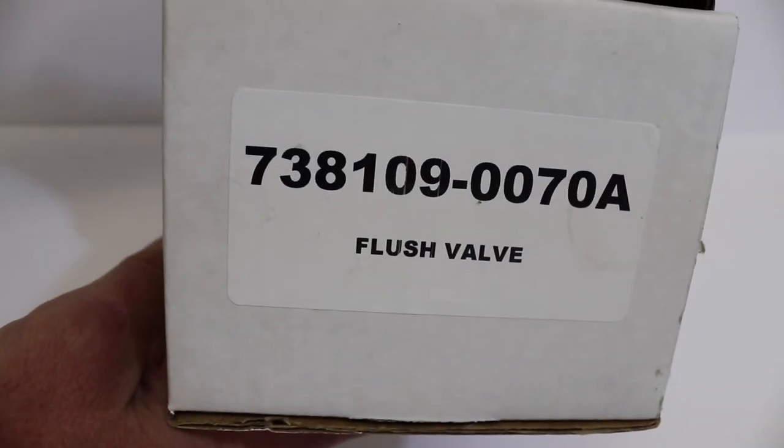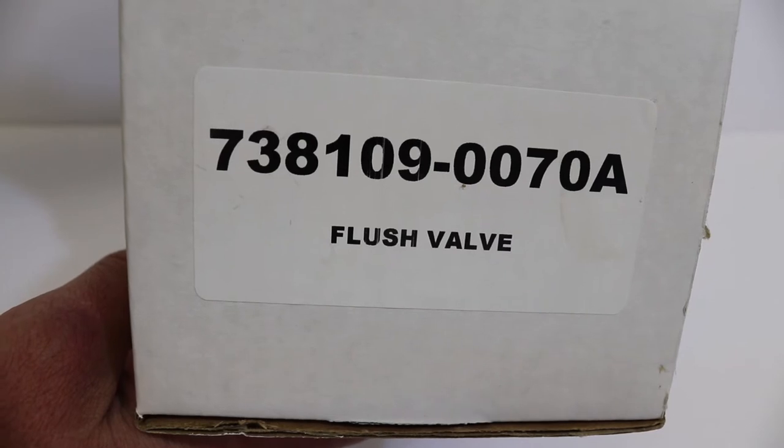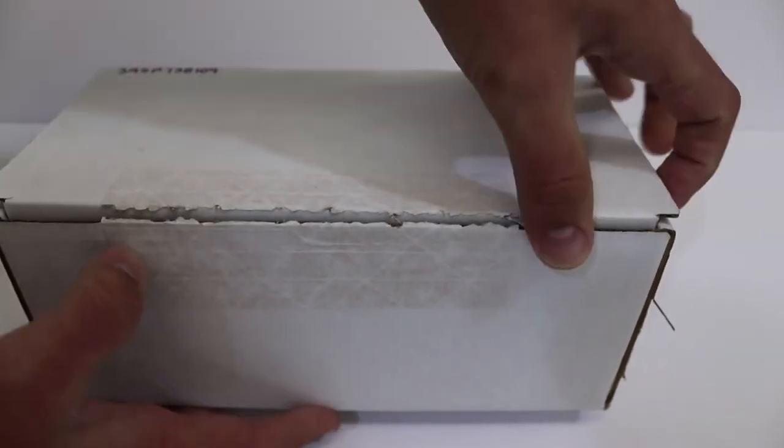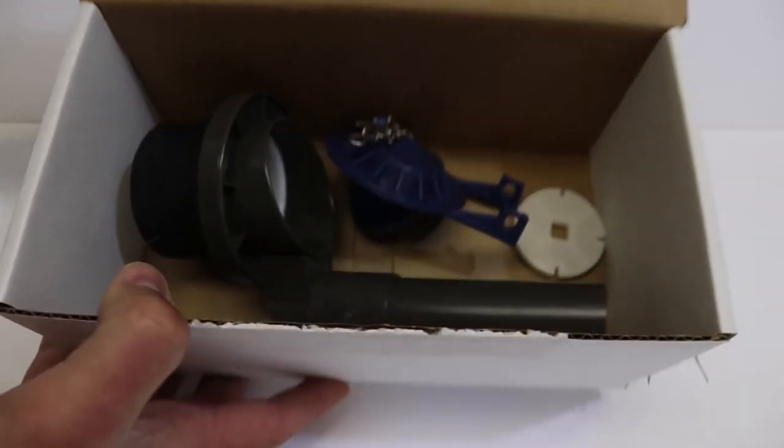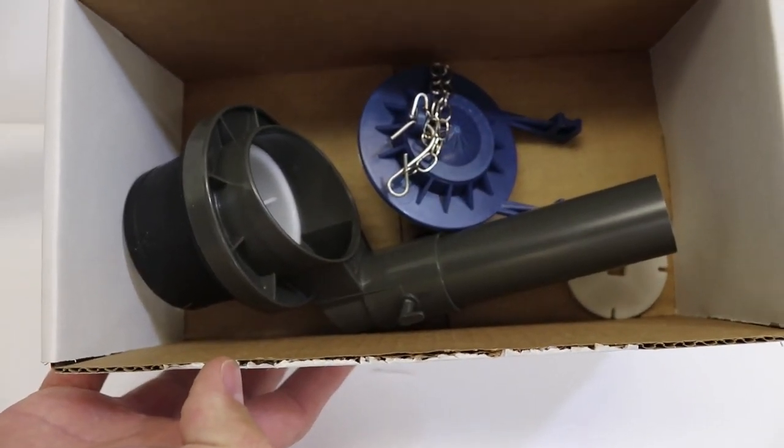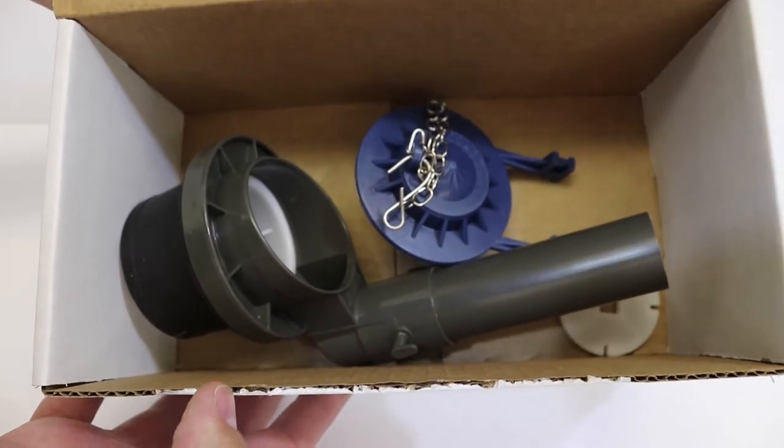This here is a 738109-0070A OEM flush valve. And inside this box when you receive this you'll see the flush valve, the flapper and a removal tool. We're going to go through that stuff in just a second here.